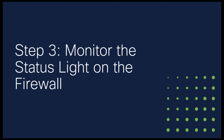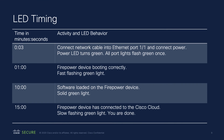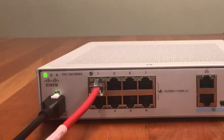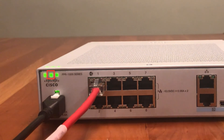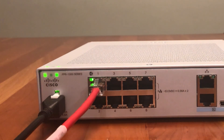Now that the firewall is plugged in and the network cable is connected, it's time to monitor the status of the firewall using the status LED. Here's an estimate of the timing of the LED status changes. These status changes could take a little more or a little less time based on network conditions and the Firepower model you're working with. This is the timing of the LED status changes for a Firepower 1010. At about 1 minute, the LED status light starts to flash fast green. If the light flashes fast amber instead, the device didn't boot properly and you will need to call your IT department for what to do next.